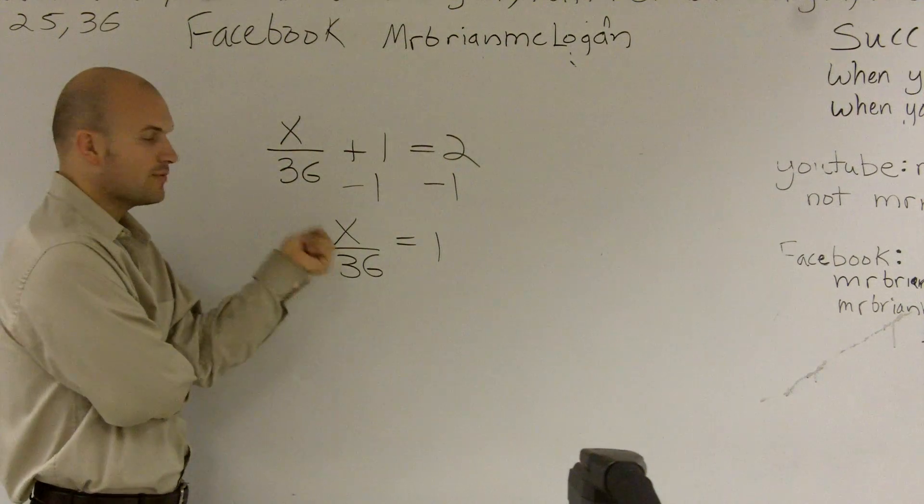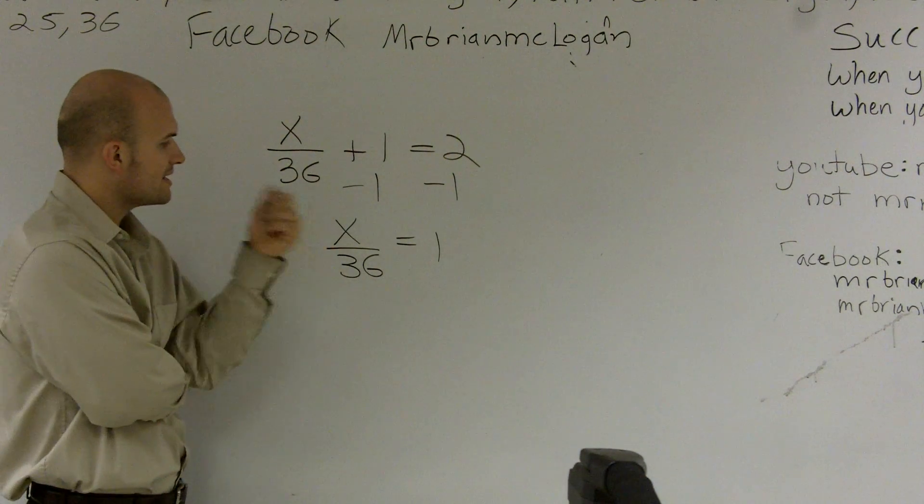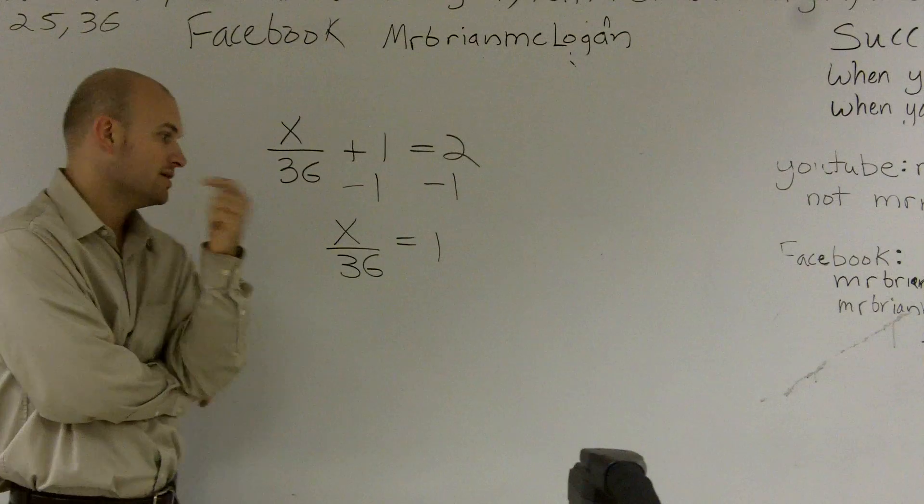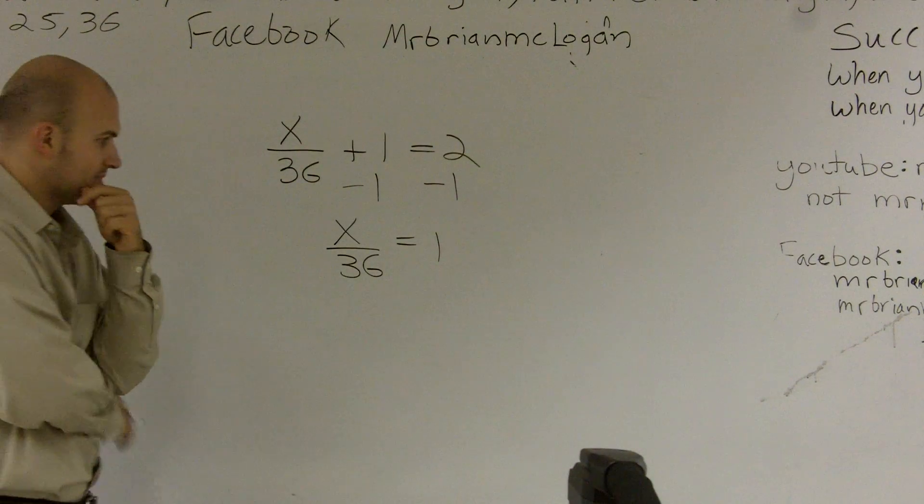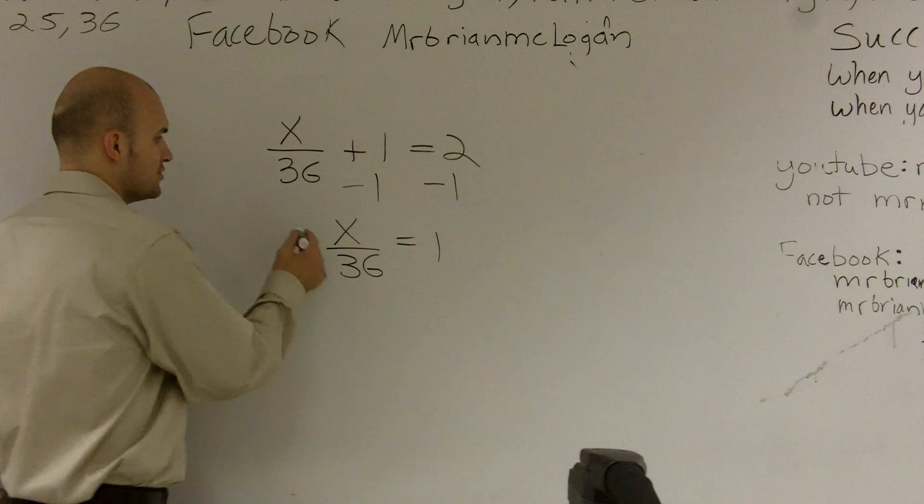And we know that whenever we write something that looks like a quotient or as a fraction, we can see that division is going on. So to undo division, I'm going to have to use multiplication.